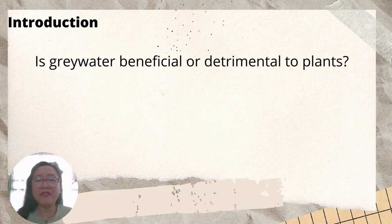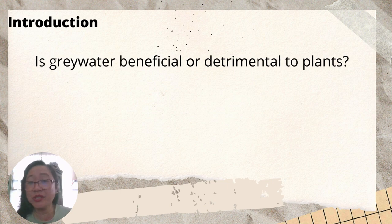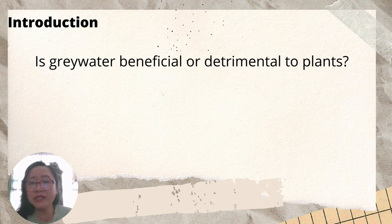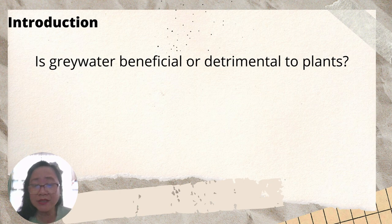For experimental research, you can start by asking a question like: Is greywater beneficial or detrimental to plants? In this way, your reader will be hooked to read more about your research to find out if greywater is really beneficial or not.